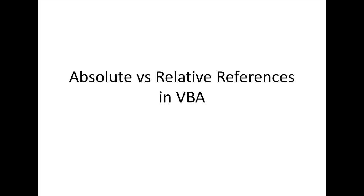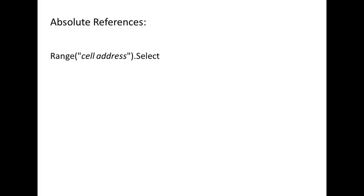In this lesson, we will discuss the difference between absolute and relative references in VBA. If we want the active cell to move to a specific cell address, we can use the Range.Select command. We can specify the cell address within quotation marks inside the parentheses following Range.